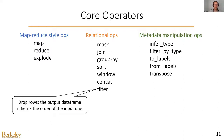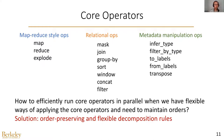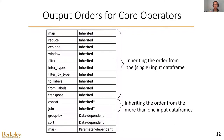Another property is that all operators need to maintain a specific order for the output data frame to maintain the same semantics as Pandas. For instance, this filter operator — if we use it to drop rows based on a predicate — the output data frame should inherit the order of the input one. The question is how to efficiently run the core operators in parallel when we have flexible ways of applying them and need to maintain orders. The solution is to develop order-preserving and flexible decomposition rules.